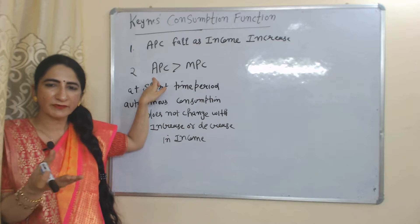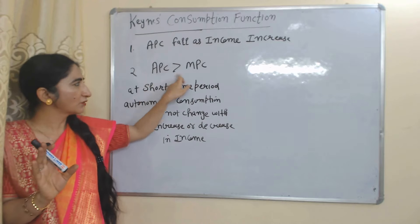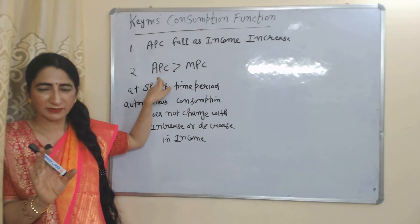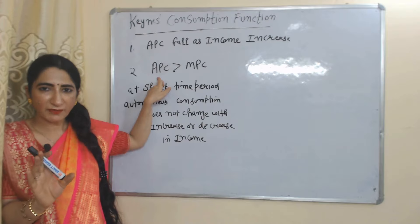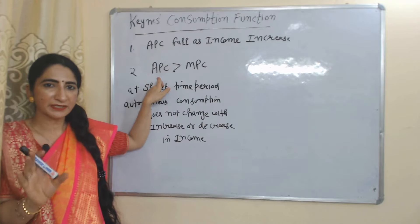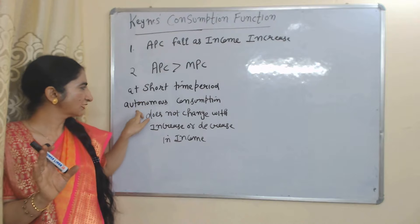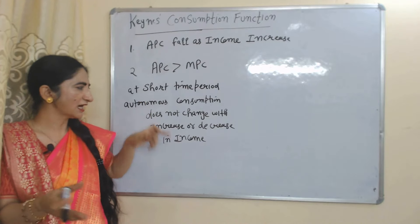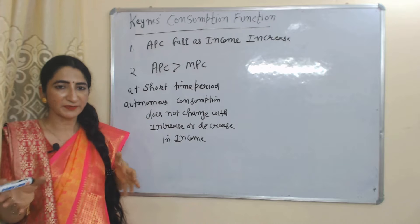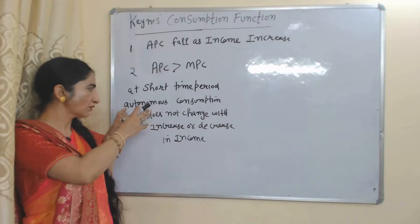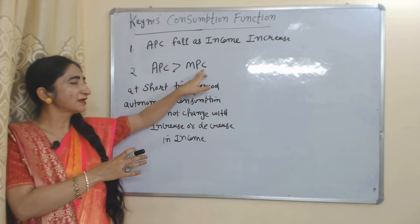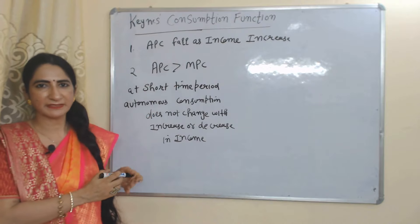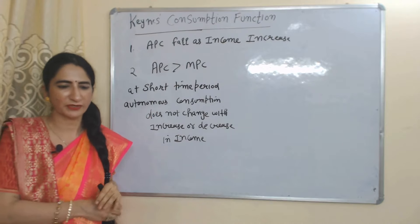MPC, marginal propensity to consume, tells us the change in consumption due to a change in income. APC, average propensity to consume, tells us how much part of our income we are consuming. According to Keynes, MPC will be less than APC. Keynes' consumption function is considered a short-run consumption function because in the short run we cannot change our autonomous consumption, which is why MPC is less than APC.